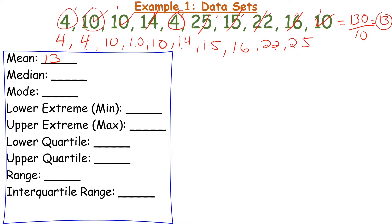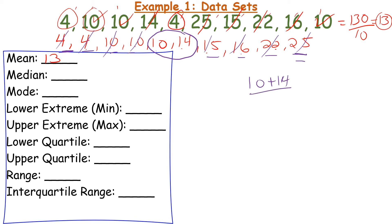To find the median, I start blocking off numbers from each end — the 4 and 25, then the other 4 and 22 — until I have two numbers left in the center. I have four numbers on each end marked out and two numbers left in the center. When that happens, find the average: 10 plus 14 divided by 2. That's 24 divided by 2, so the median is 12. With an even amount of numbers you'll have two in the middle and take their average.